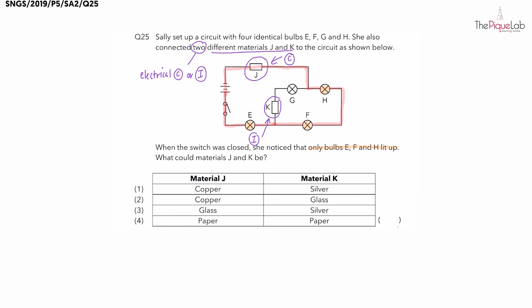So let's match the options to material J, the electrical conductor. Copper is a very common metal used for making wires. So do you think it's an electrical conductor or insulator? It must be an electrical conductor. So we have copper as an option. What about glass and paper? Do glass and paper allow electricity to flow through the material? No. So glass and paper are electrical insulators.